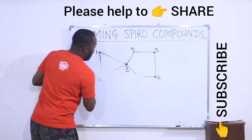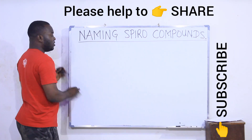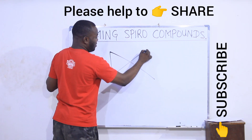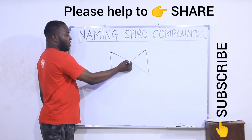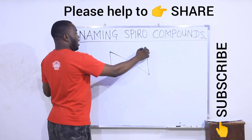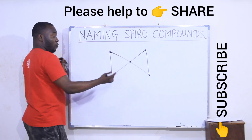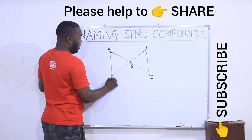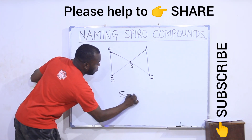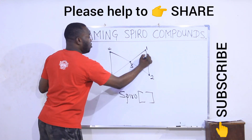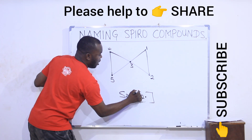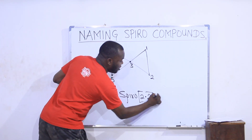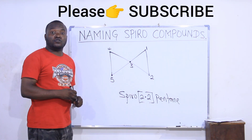I'm going to name one more, after which I will give you one to name by yourself. This is a spiro compound with the spiro carbon atom at the center. This side has two carbons and this side also has two carbons, so both sides are equal. I can number from any side: one, two, three, four, and five. So the name is spiro — two carbons on one side, dot, two carbons on the other side — total five carbons means pentane. This is spiro[2.2]pentane.